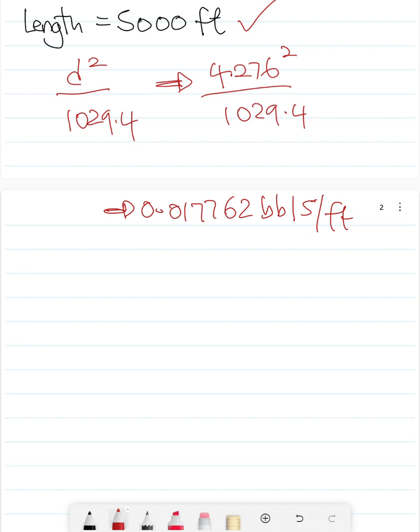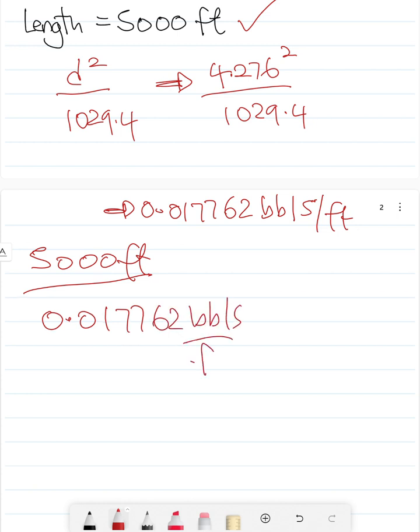To calculate the volume which is the next question we have been asked to calculate, recall we are told that we have 5000 feet of this pipe. So quickly 0.017762 barrels per feet times 5000 feet. So you see we have feet here which cancels out this feet here and our answer is going to be this times this which is going to give us 88.8 barrels.